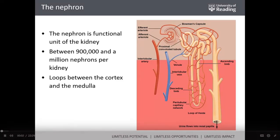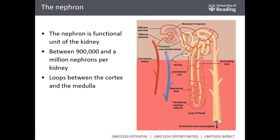The nephron is the functional unit of the kidney. There are around 900,000 to a million nephrons per kidney, and the nephrons are distributed radially between the cortex and the medulla.